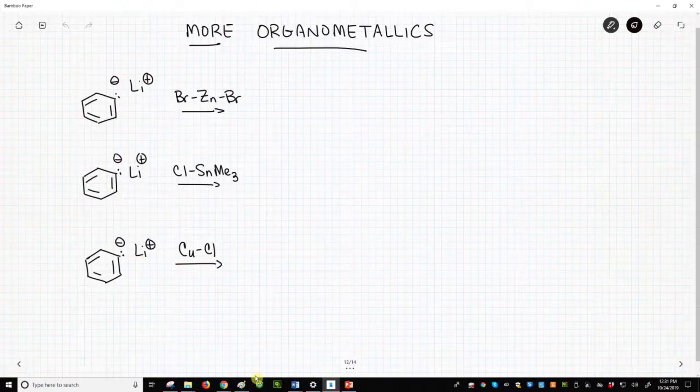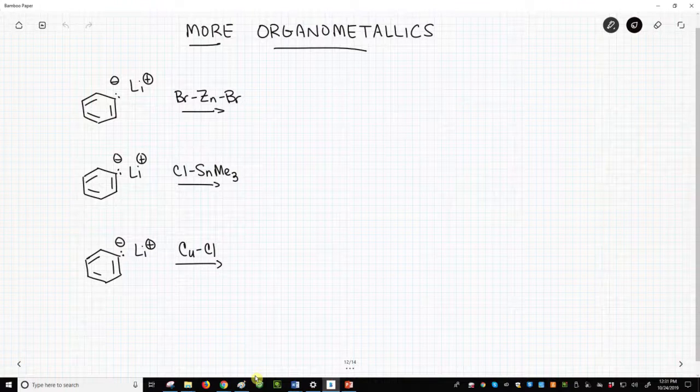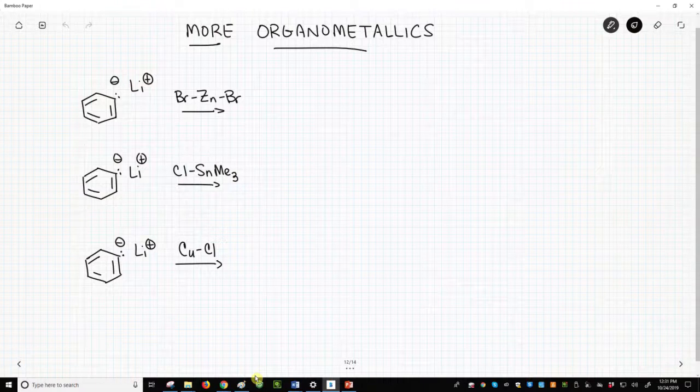In introductory organic chemistry, the most commonly encountered organometallic reagents are Grignard and organolithium reagents. These two organometallics are prominent because the carbon atoms in these reagents are extremely nucleophilic.